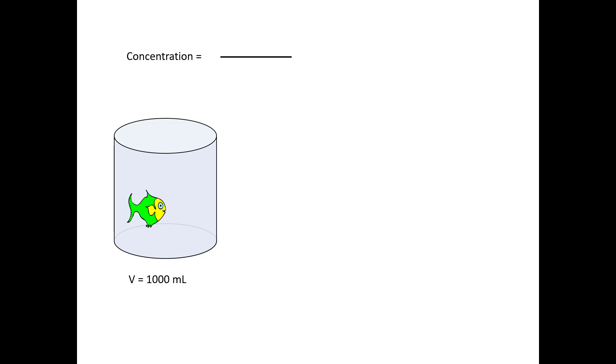Now I'm going to put a second fish in our tank. Right now our concentration is one fishar. If I add a second fish, now our concentration would be two fish per liter. That would be the equivalent to two fishars.